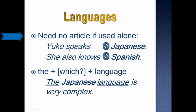Languages need no article if used alone. For example, Yuko speaks Japanese. She also knows Spanish. We use a zero article — no article — before Japanese and Spanish. This is the most common pattern, especially after verbs like speak, know, understand.